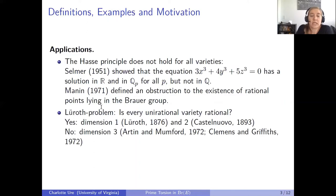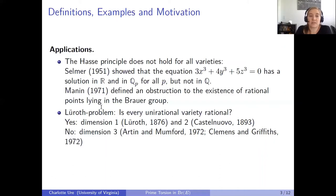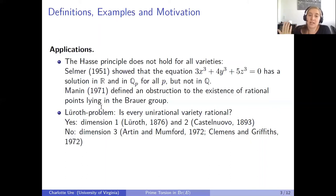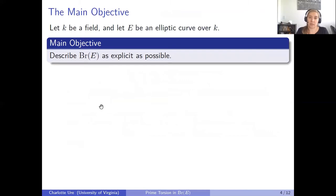Another avenue of rationality comes from the Lüroth problem, which asks: is every unirational variety rational? This is true in dimensions 1 and 2, proved by Lüroth and Castelnuovo in 1876 and 1893. It took almost a hundred years to find counterexamples. In dimension 3 this is not true, with constructions due to Artin and Mumford and to Clemens and Griffiths, both published in 1972, which explicitly used elements in the Brauer group to produce unirational but non-rational varieties.